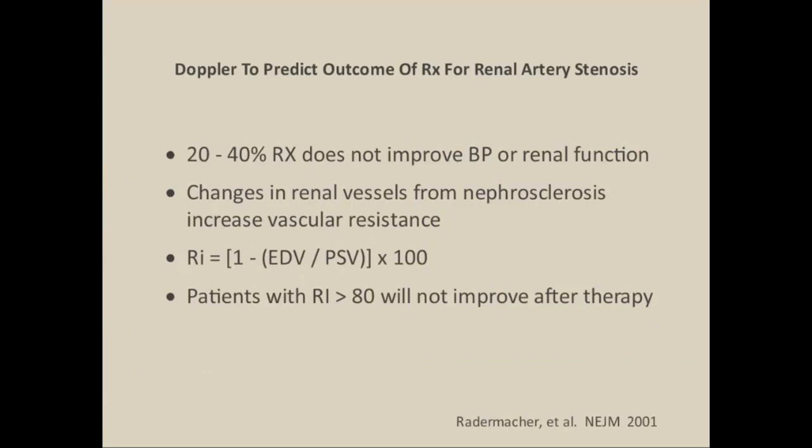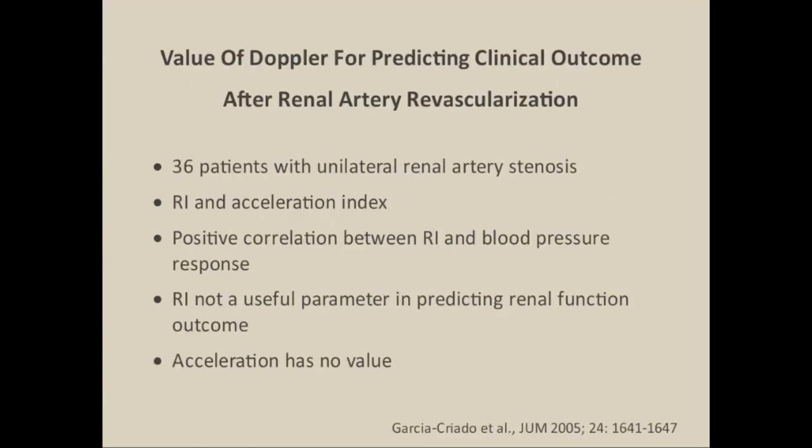The resistive index has gained attention and controversy because of a New England Journal paper stating that patients with elevated resistive index may not respond to revascularization for renal artery stenosis. Many nephrologists wanted to use the RRI to select patients for treatment. However, many subsequent studies have refuted this — including one from the Journal of Ultrasound in Medicine stating the RRI is not a useful parameter in predicting renal function outcome. This remains a controversial point.